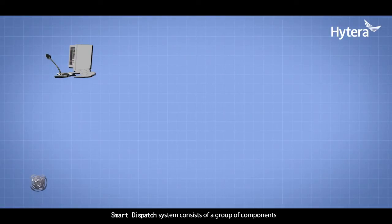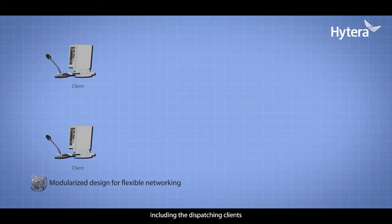Smart Dispatch System consists of a group of components, including the dispatching clients, servers, gateways, and consoles.